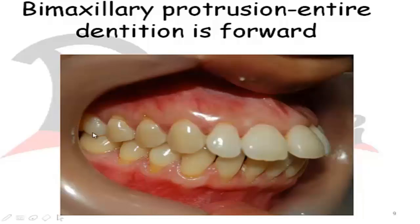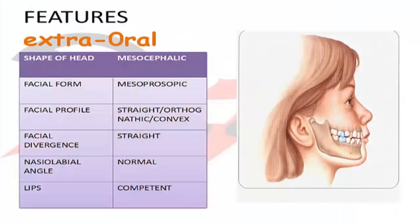In bimaxillary protrusion, the molar relationship will be Class 1 and canine relationship will be Class 1, but the anterior teeth will be proclined. The overjet and overbite can be normal, but usually they show spacing between the teeth. Now let's look at the extraoral and intraoral features of such a patient.